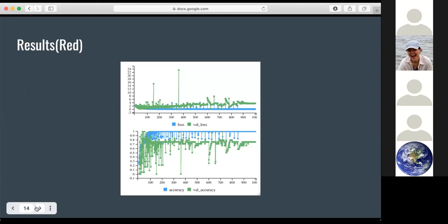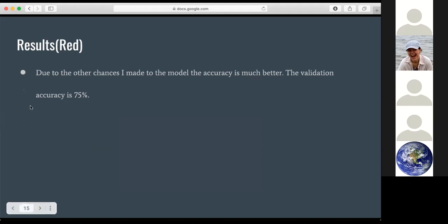So this is red. So the validation accuracy is 75%, which is okay. Not groundbreaking.